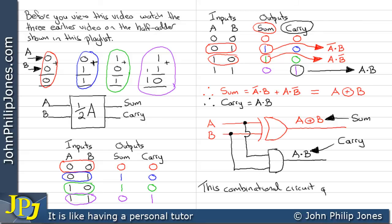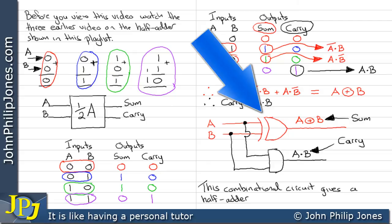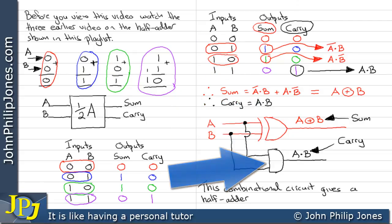This combinational circuit actually gives a half adder. Of course this particular circuit only requires the 2 gates: the exclusive OR and the AND gate.